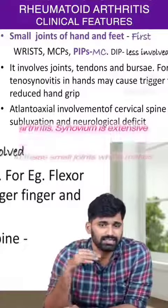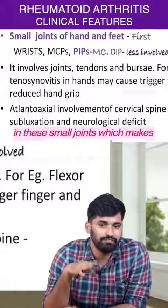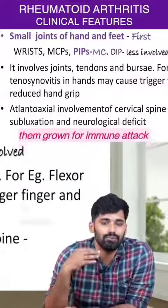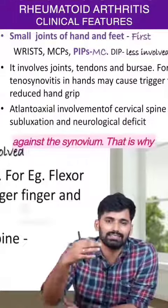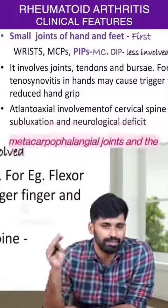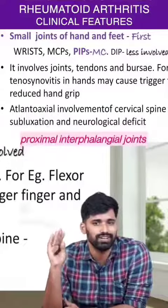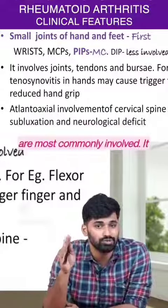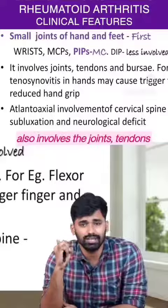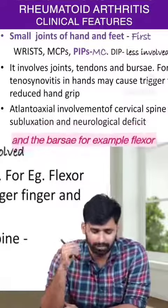Synovium is extensive in these small joints, which makes them prone for immune attack against the synovium. That is why metacarpophalangeal joints and the proximal interphalangeal joints are most commonly involved. It also involves the joints, tendons, and the bursae.